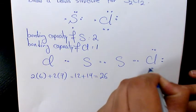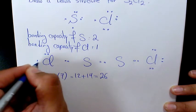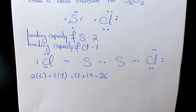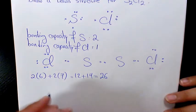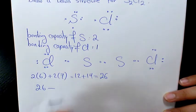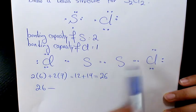Then we need to determine how many electrons are still available by subtracting the total number used from the total number of available electrons. So we have 26 minus 18, which equals 8.